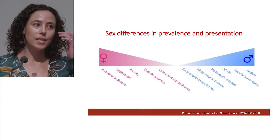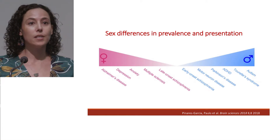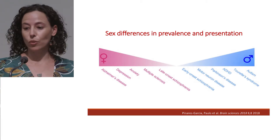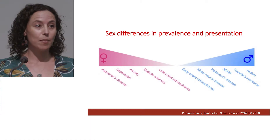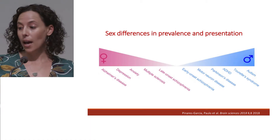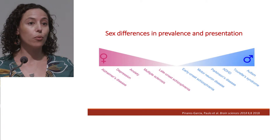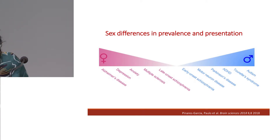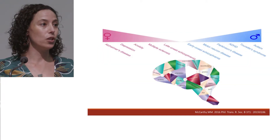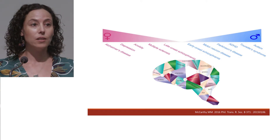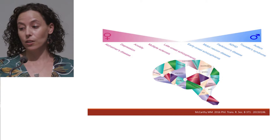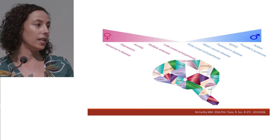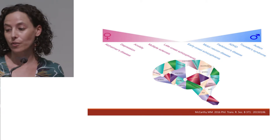Some of the interest in sex hormones has come from the profound sex differences that are seen in the prevalence rates and presentations of a range of different neuropsychiatric disorders. For example, in Alzheimer's disease two thirds of people are female, and at the other end of the spectrum in autism, three quarters of people with autism are male. These sex differences can be attributed to numerous factors including cultural, environmental, genetic, and chromosome factors, and also sex hormones, which is what our team is interested in.